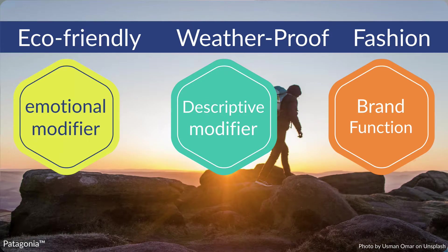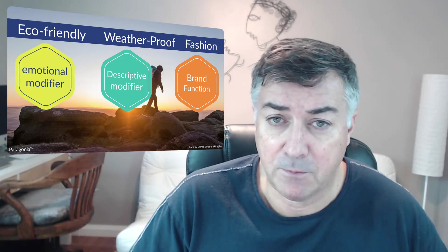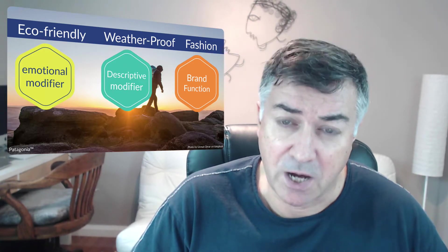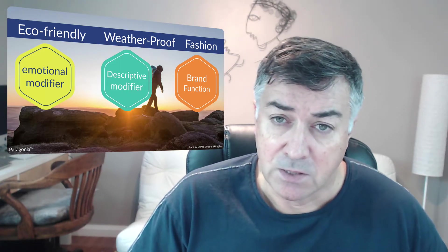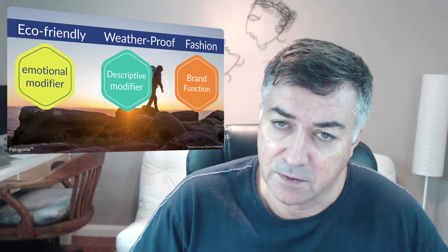'Eco-friendly' is the emotional modifier. That's something Patagonia claims both internally and in outside communication — everything they do is based on using sustainable resources, so their process is eco-friendly. Eco-friendly resonates with the values of people who go and live outside, because they want to enjoy nature but not destroy it. The internal message for Patagonia employees is that, being devoted to helping environmentally friendly people, they must adopt and follow processes to be in line with that.